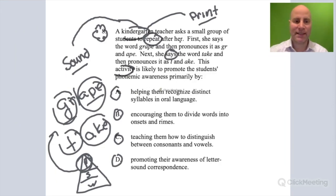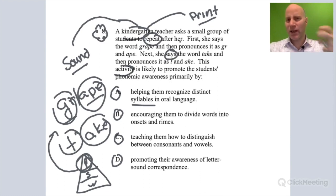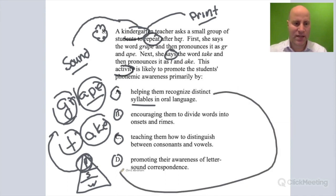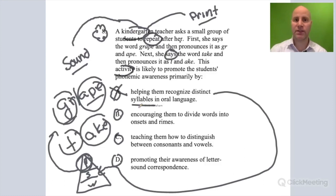Answer A: helping them recognize distinct syllables in oral language. Let's highlight the word 'syllables.' This isn't an activity where they're saying how many syllables are in 'wonderful,' where the student claps out the syllables they hear in that multi-syllable word. If it was an activity involving that, we'd be looking for something at an intermediate level — the syllable level. But we're not, because this one definitely involves isolating individual sounds, not individual syllables. So A is not the answer.